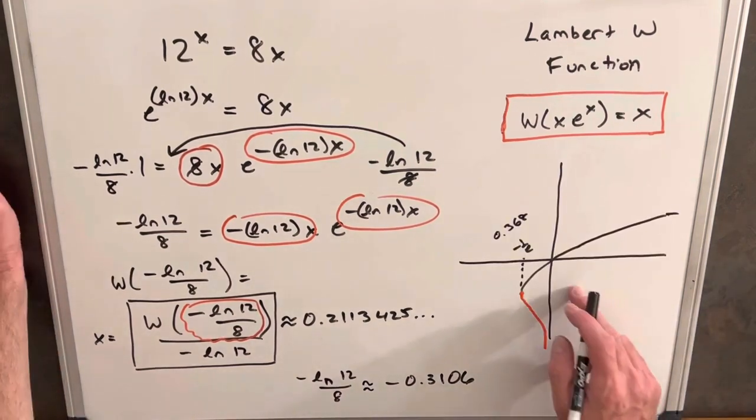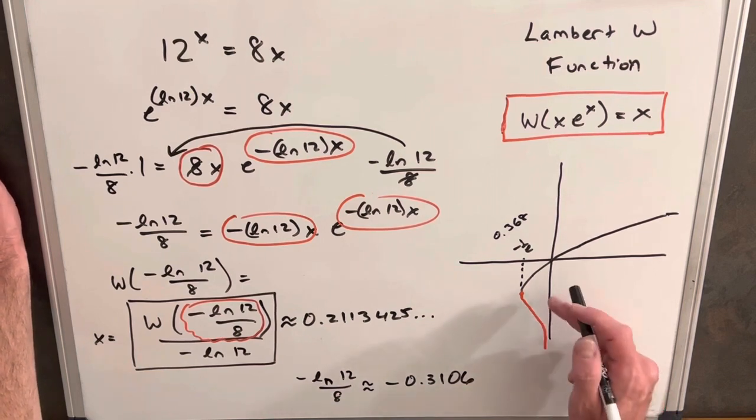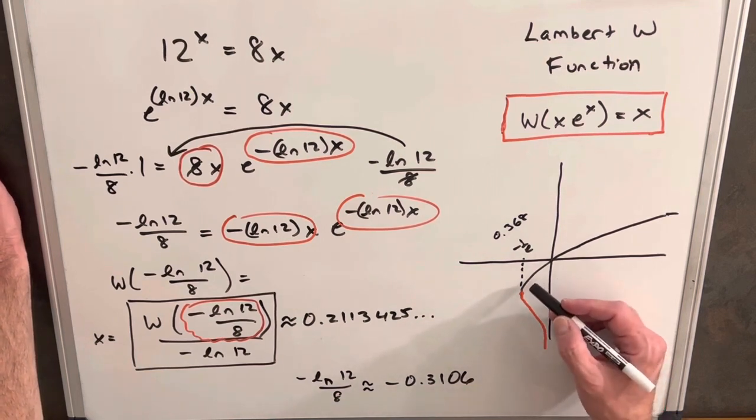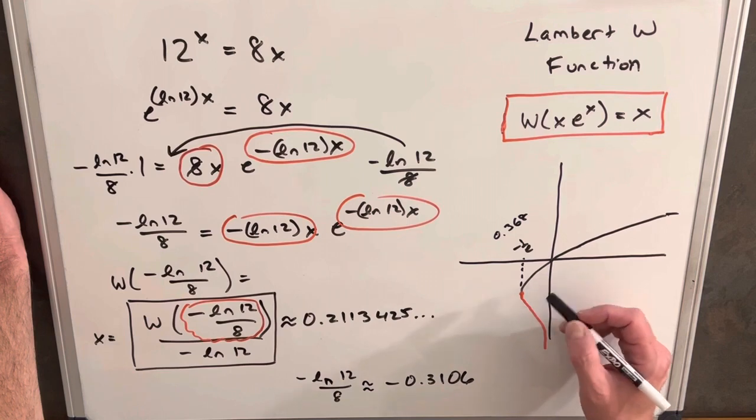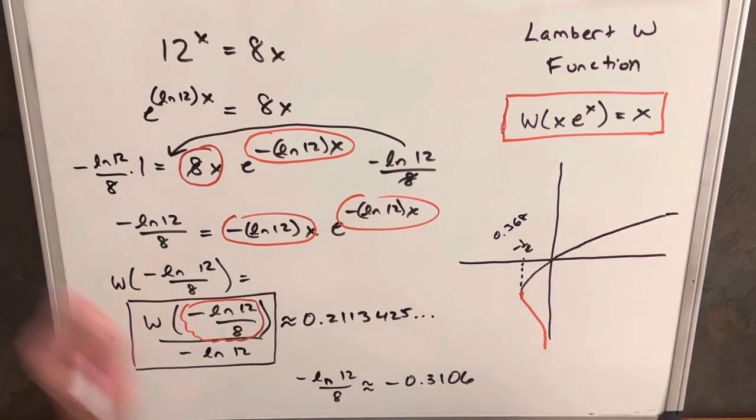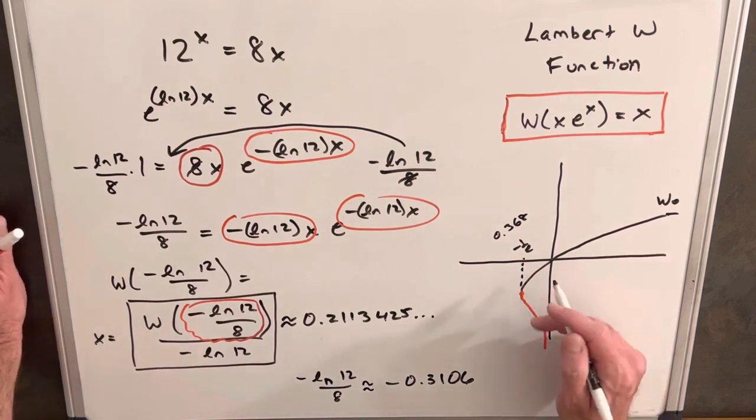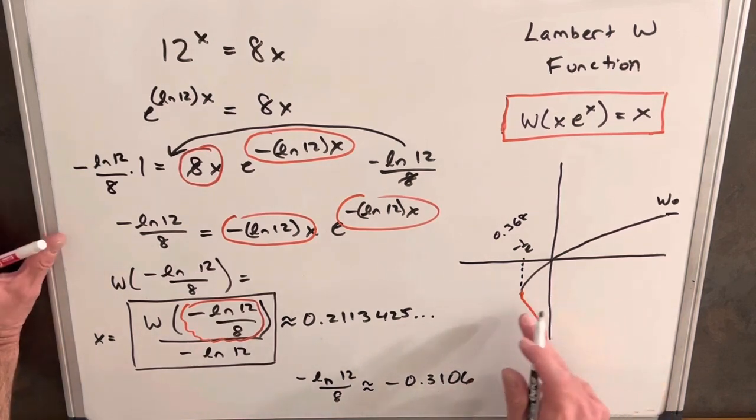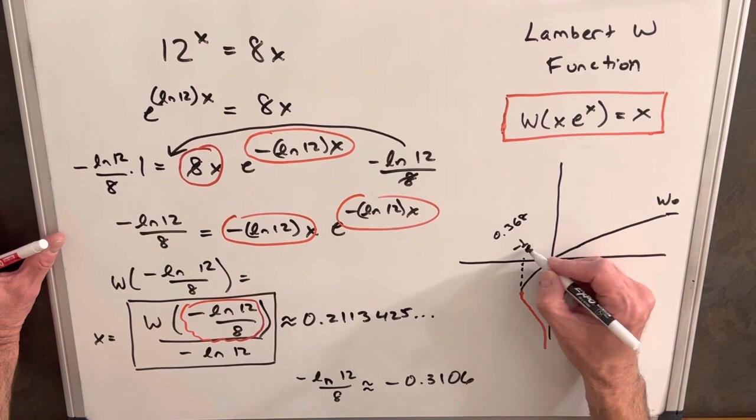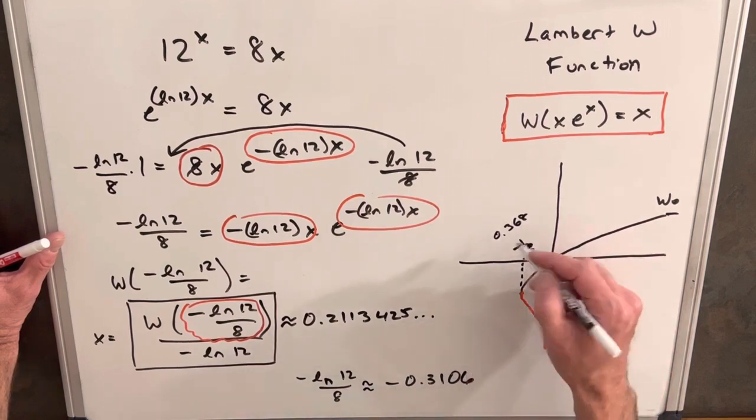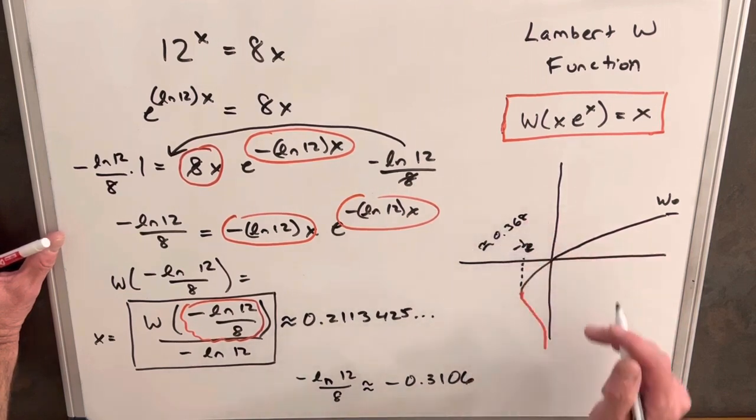So we have this graph of the Lambert W function over here on the right. Now in black, we have the principal branch, which on Wolfram Alpha is written as W0, like this. And so we notice that the domain of this starts at minus 1 over e, so it starts at minus 1 over e, which is about minus 0.368.